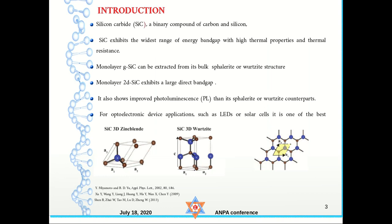Silicon carbide is a binary compound of carbon and silicon. The bulk form has a wide band gap with high thermal properties and resistance. The monolayer graphene-like silicon carbide can be extracted from the bulk form, and the monolayer also exhibits a large direct band gap. It shows improved photoluminescence which can be used in LEDs and solar cells.